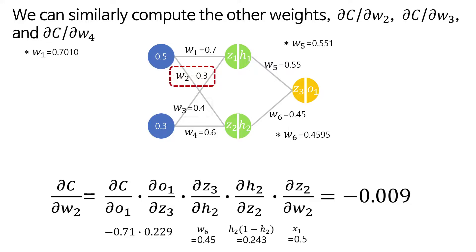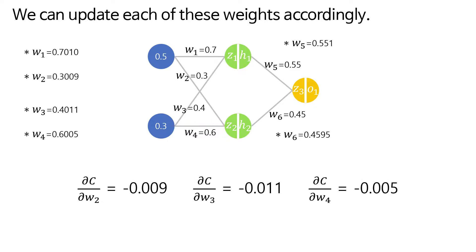The remaining step is to update the weight. w1 becomes 0.7010. We can similarly compute the other weights: ∂c/∂w2, ∂c/∂w3, and ∂c/∂w4. We can update each of these weights accordingly.